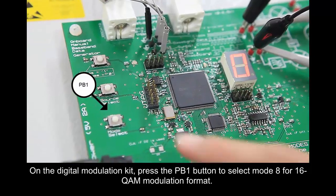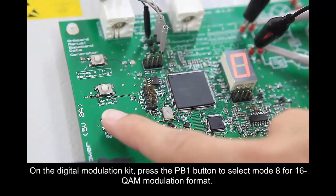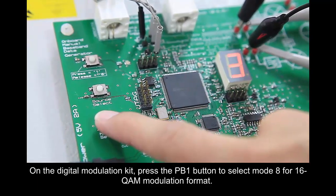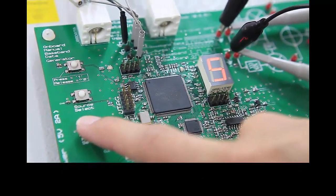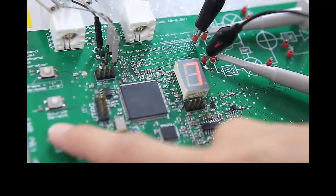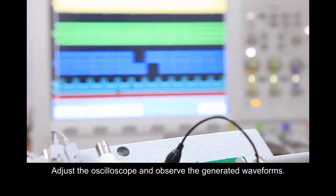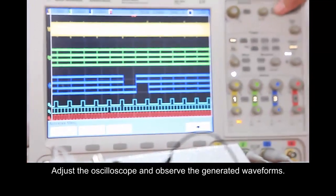On the digital modulation kit, press the PB1 button to select mode 8 for 16QAM modulation format. Adjust the oscilloscope and observe the generated waveforms.